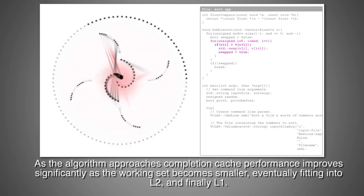As the algorithm approaches completion, cache performance improves significantly as the working set becomes smaller, eventually fitting into L2 and finally L1.